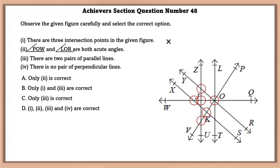Angle POW and LOR are both acute angles. As we can see here, POW is an obtuse angle, not an acute angle. So we need not check LOR angle.